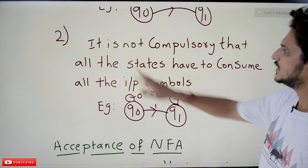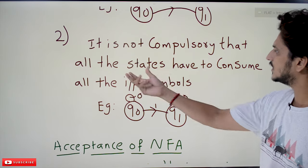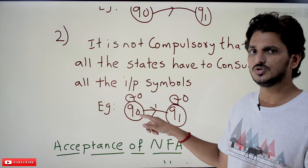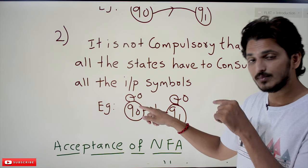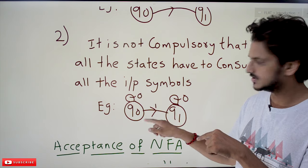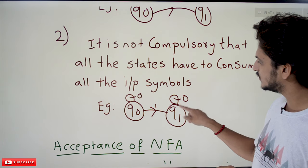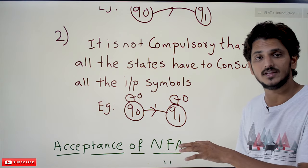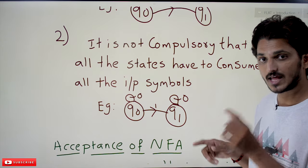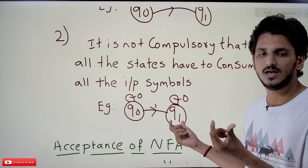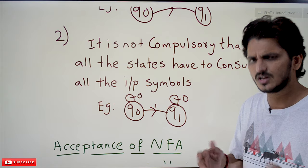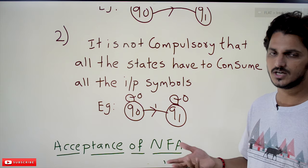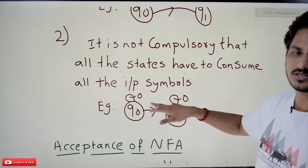The second condition: it is not compulsory that all states consume all input symbols. For example, assume input symbols are 0 and 1. On Q0 we mentioned a transition for input symbol 0, but on Q1 we mentioned a transition for input symbol 0 but did not mention one for input symbol 1. This is allowed in NFA but not in DFA. In NFA, according to your logic, you mention only the transitions you need.